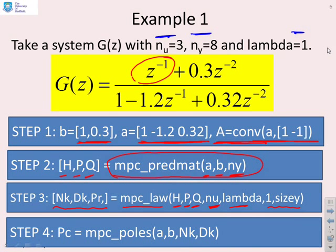And finally, if you want to get the closed-loop pole polynomial P_c, you can use this file here, MPC_poles, which needs the parameters A, B, N_k, and D_k.